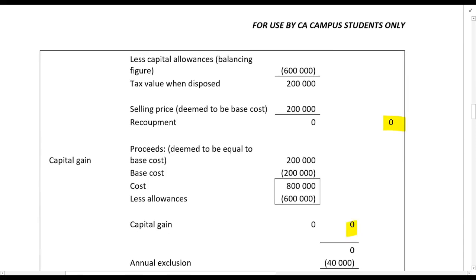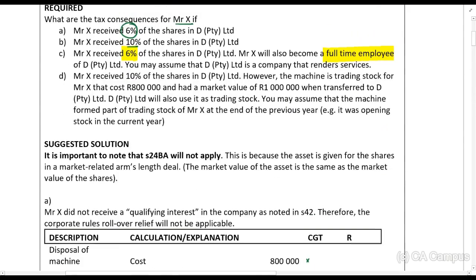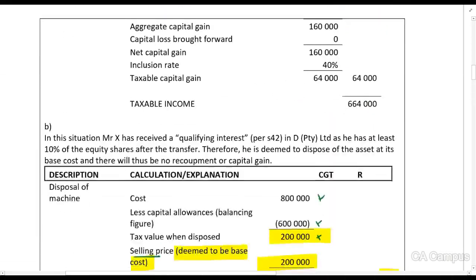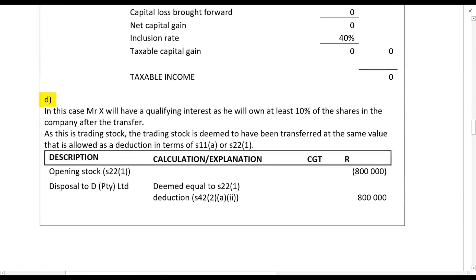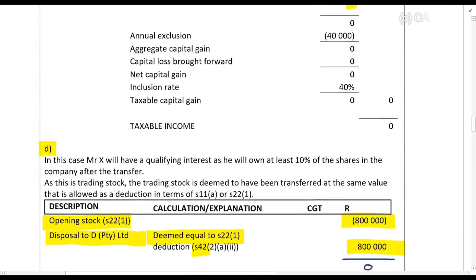Again, selling price equals the base cost. In part D, Mr. X received ten percent of the shares, however the machine is trading stock for Mr. X that cost 800,000 rands and had a market value of one million rands when transferred. DP to I Limited will also use it as trading stock. Mr. X has an opening stock deduction of 800,000 and since Section 42 applies, the deemed disposal is also equal to the opening stock — so there is no effect.